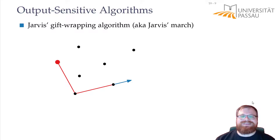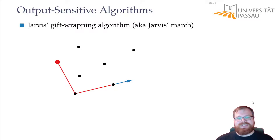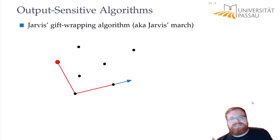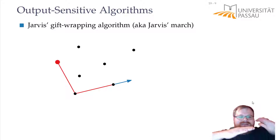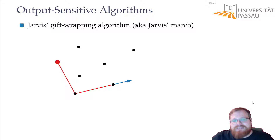Now you probably already know why this is called a gift-wrapping algorithm. If you have some object and you want to wrap it as a gift, that's basically what you do. You start from one side and keep rotating until you get back to the beginning again.